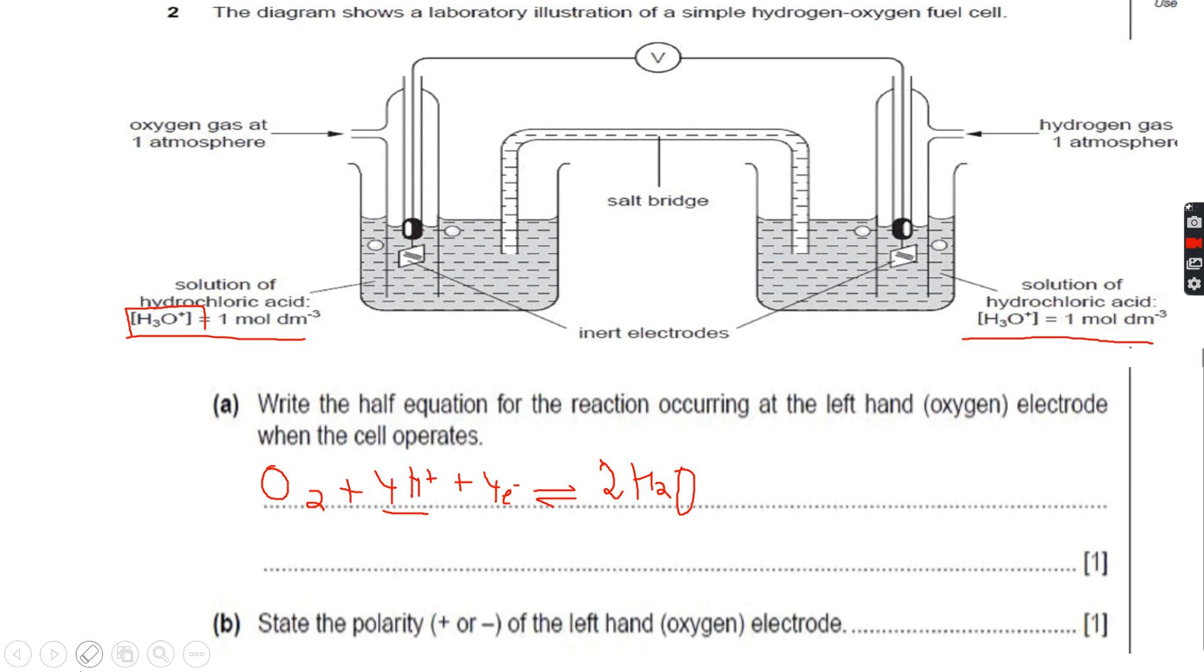We have written the half equation. Now state the polarity, plus or minus, of the left hand oxygen electrode. If you look at the E° for this half equation, it is +0.40 volts. The E° for this half equation is... not sorry, I again looked at the other one.